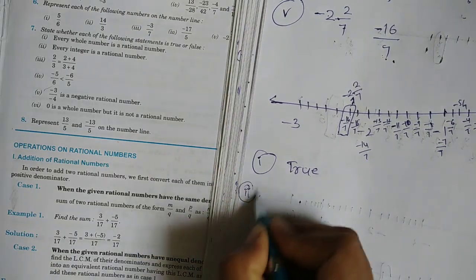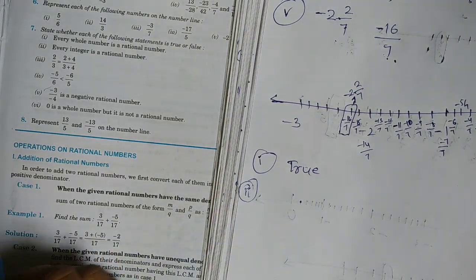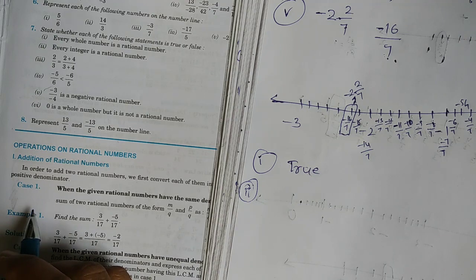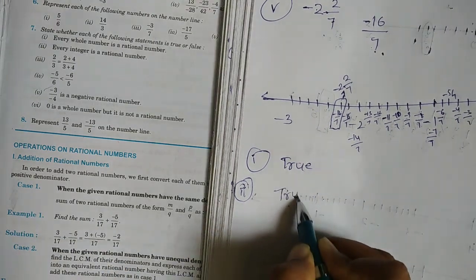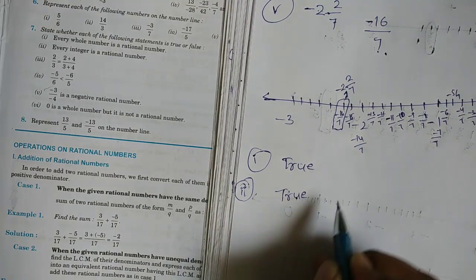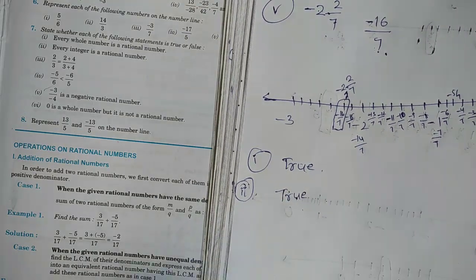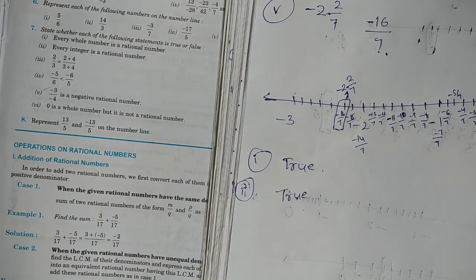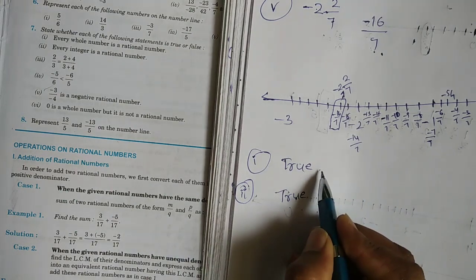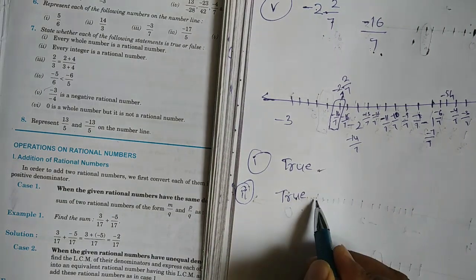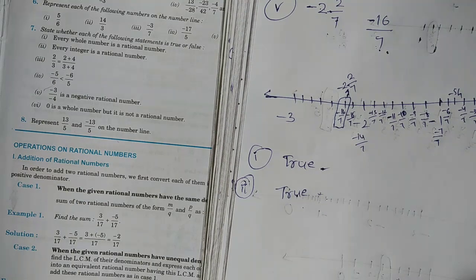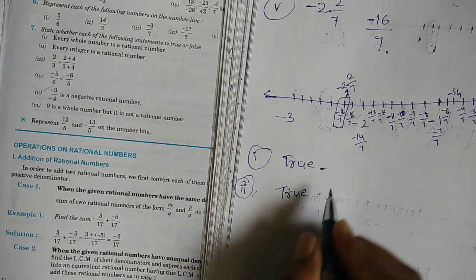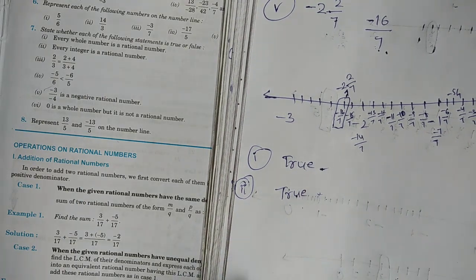Second one: every integer is a rational number. This is also true. We have numbers and integers — both whole numbers and integers are rational numbers.